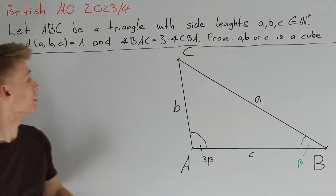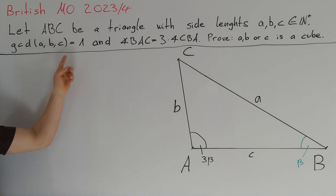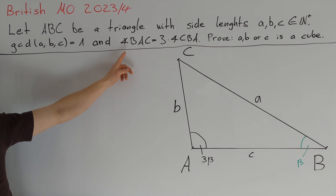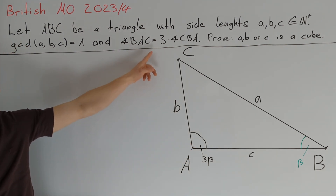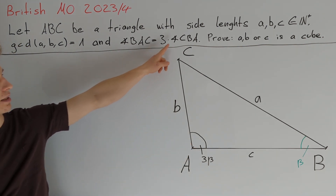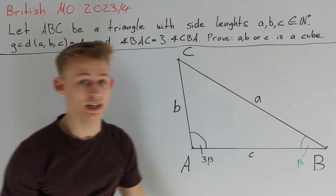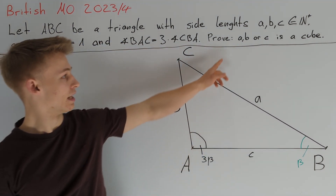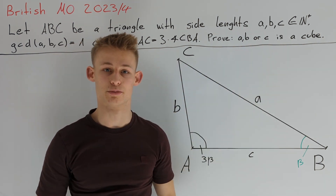Moreover, we have that the greatest common divisor of a, b, and c is equal to 1, and that angle BAC is equal to 3 times angle CBA. We shall prove that one of a, b, or c is a perfect cube.